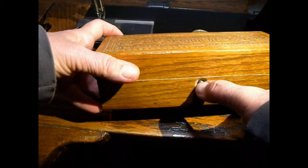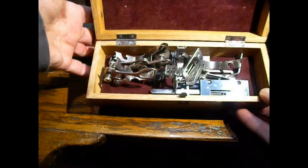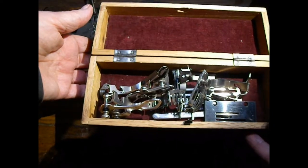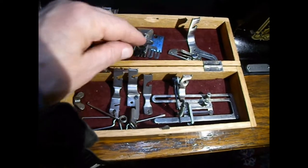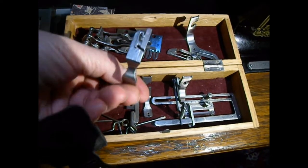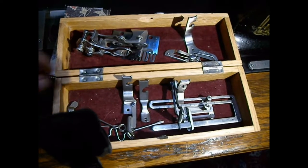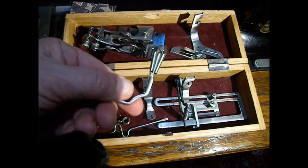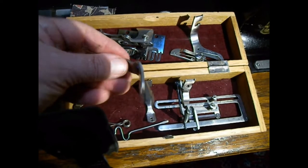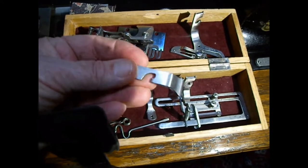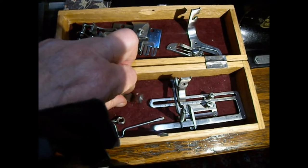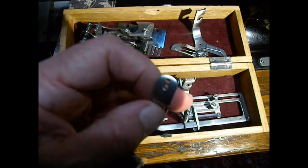I have a fairly good sized group of attachments. I am missing a few. What I do have is the narrow hemmer foot, the bias binder, and what I assume is the braiding foot or cording foot.